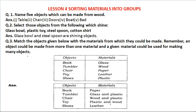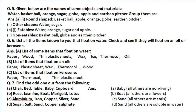For Lesson 4 — Sorting Materials into Groups — for example, name five objects which can be made from wood. The NCERT solutions give you five, but you can name anything you want. Koshish karo ki answer aap apne aap bana sako, kyunki yeh bahut easy hai. Select those objects from the following which shine — aap apne aap selection kariye. I have done this just to help those who have missed their classes, since this year we had online classes.